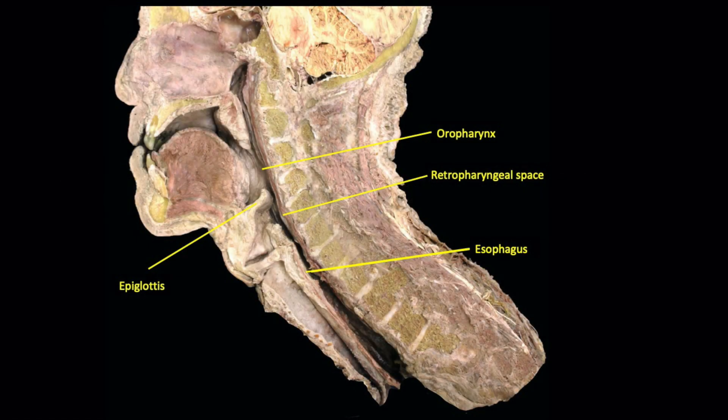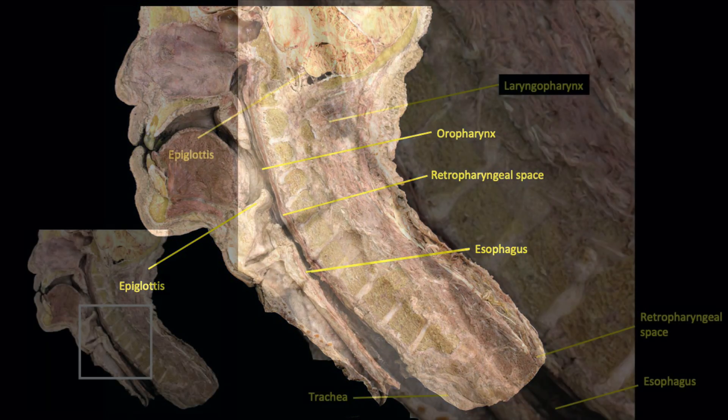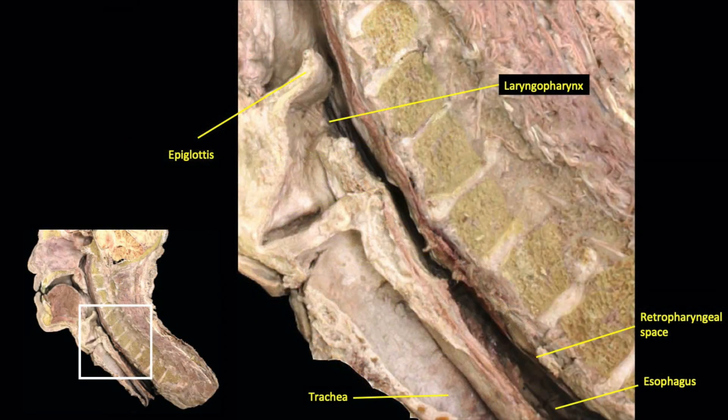Let's dissect the retropharyngeal space. Because the retropharyngeal space is a potential space, we need to zoom in to actually see its location. And here it is. When we zoom in on the image, the space is between the muscle layer forming the esophagus and the pharyngeal constrictors and the fascia lining the vertebrae.